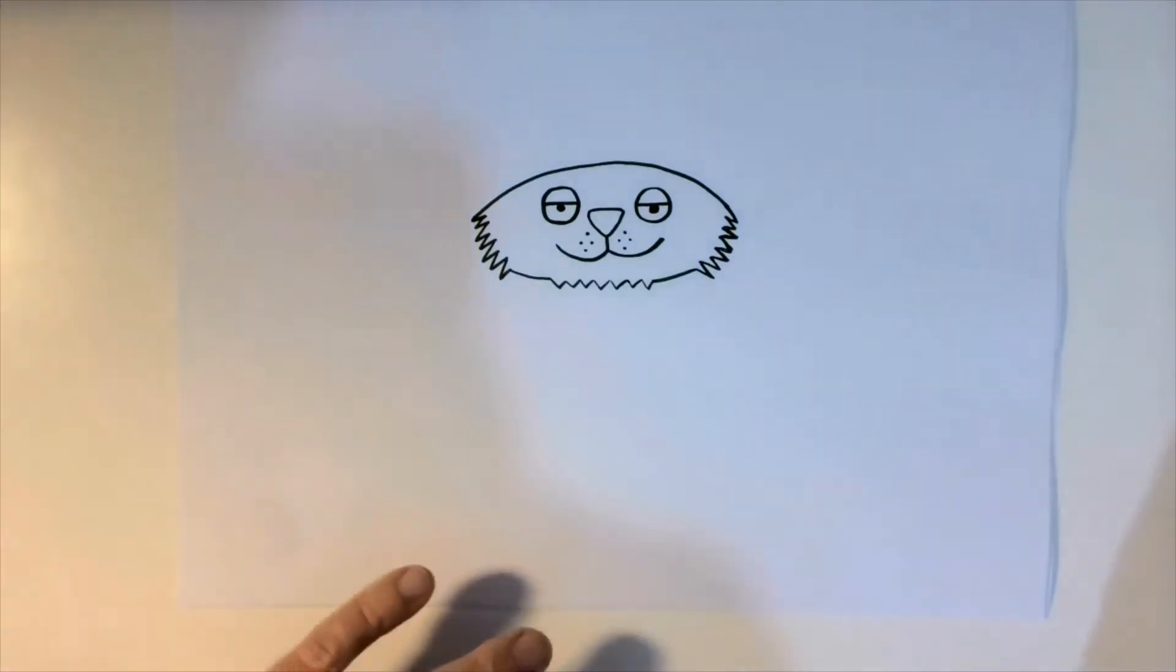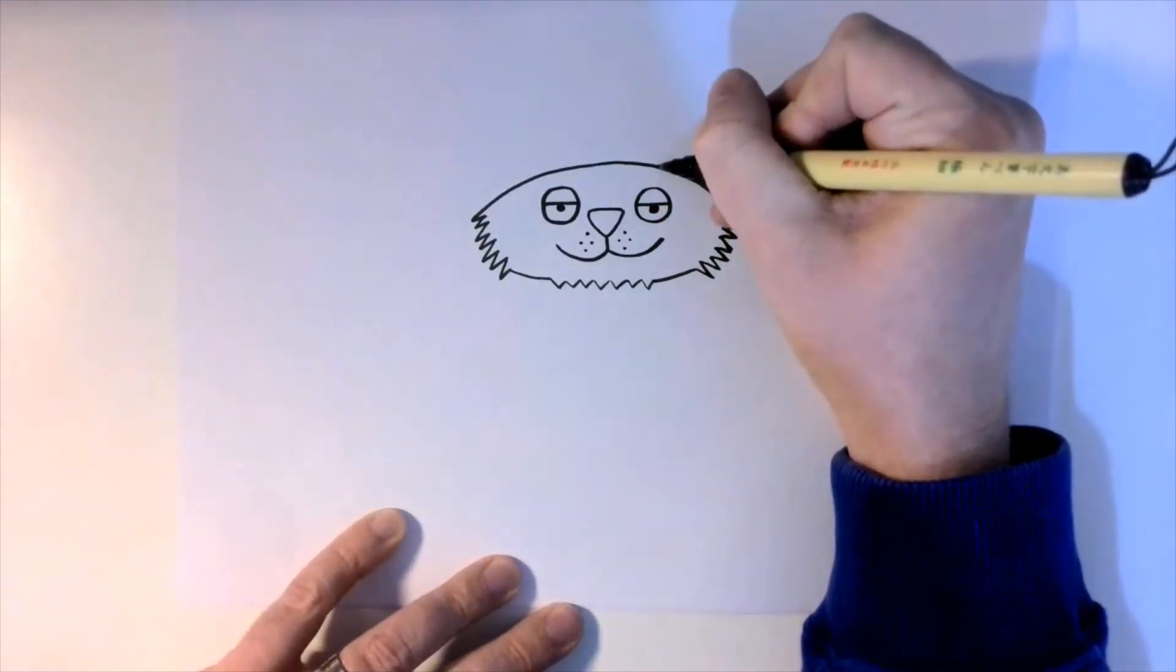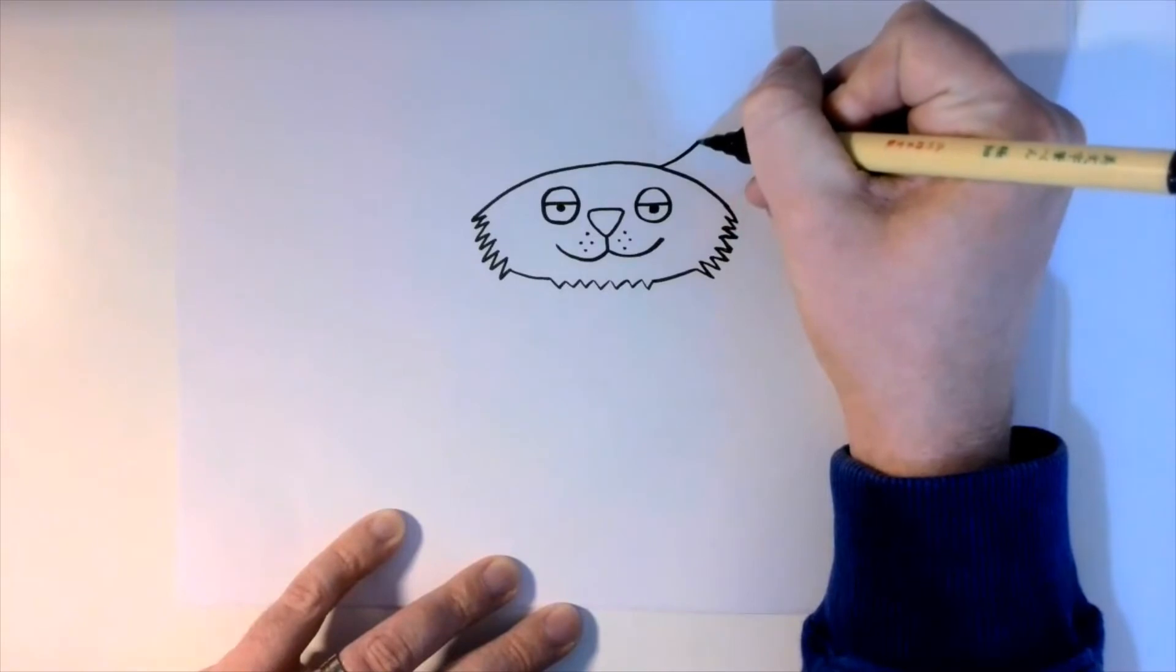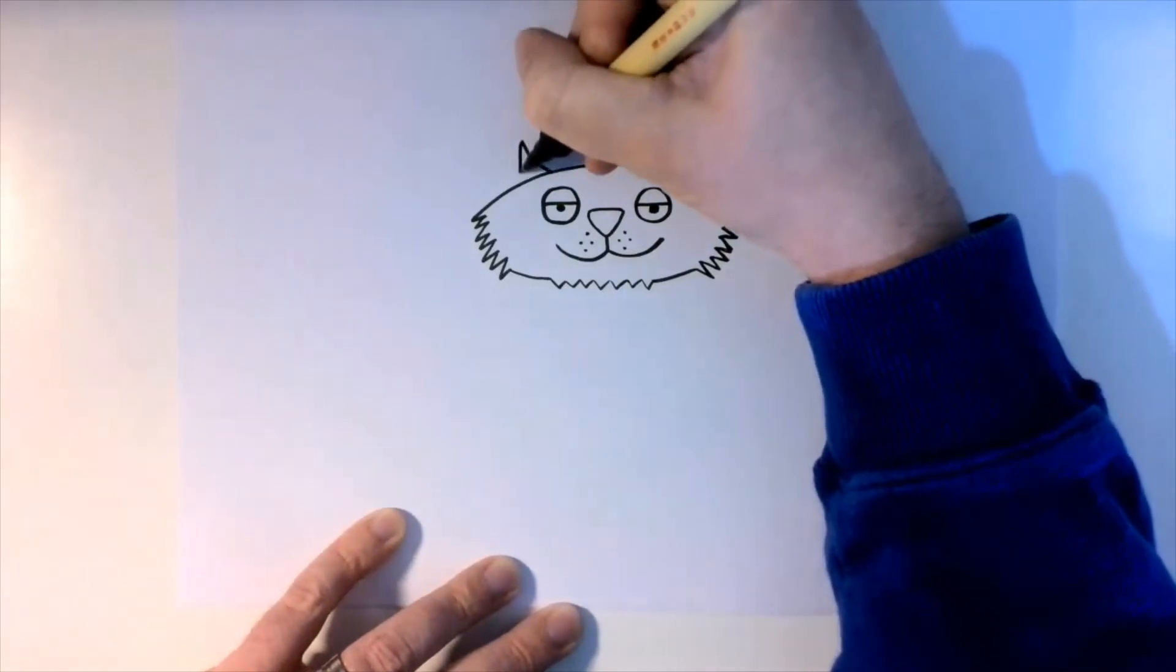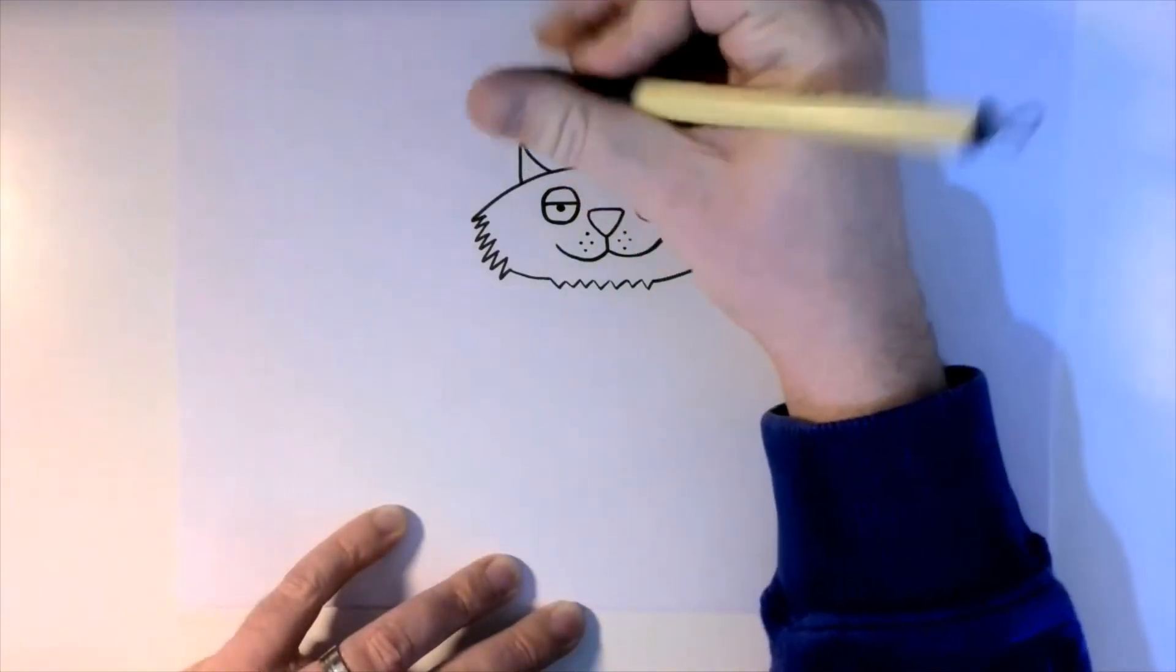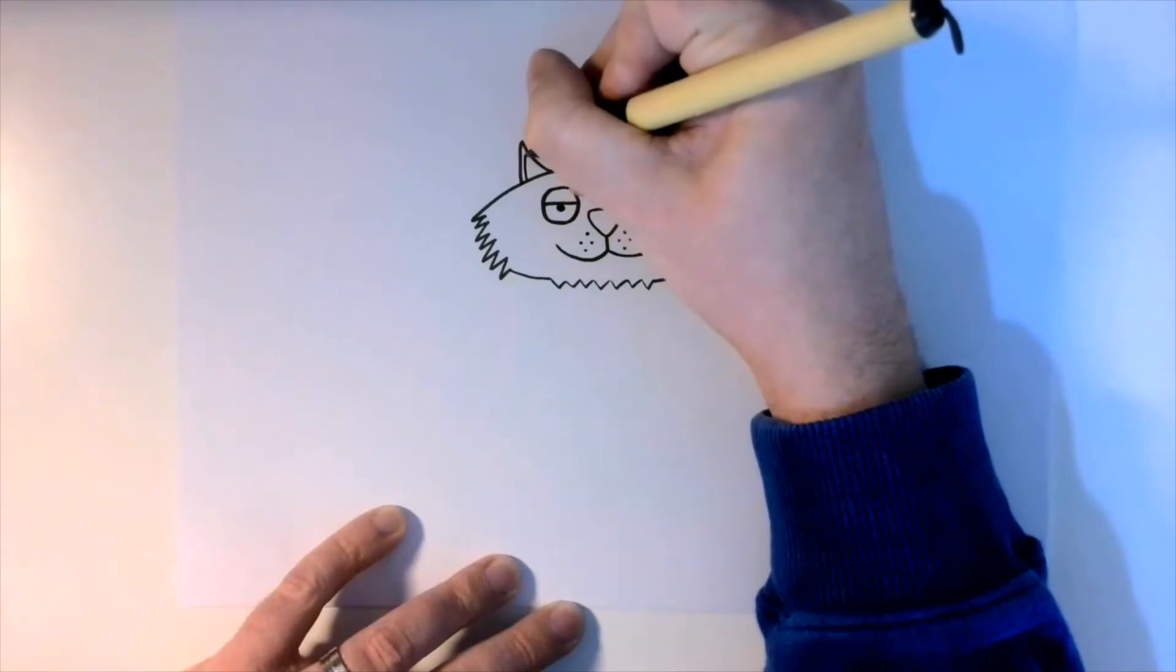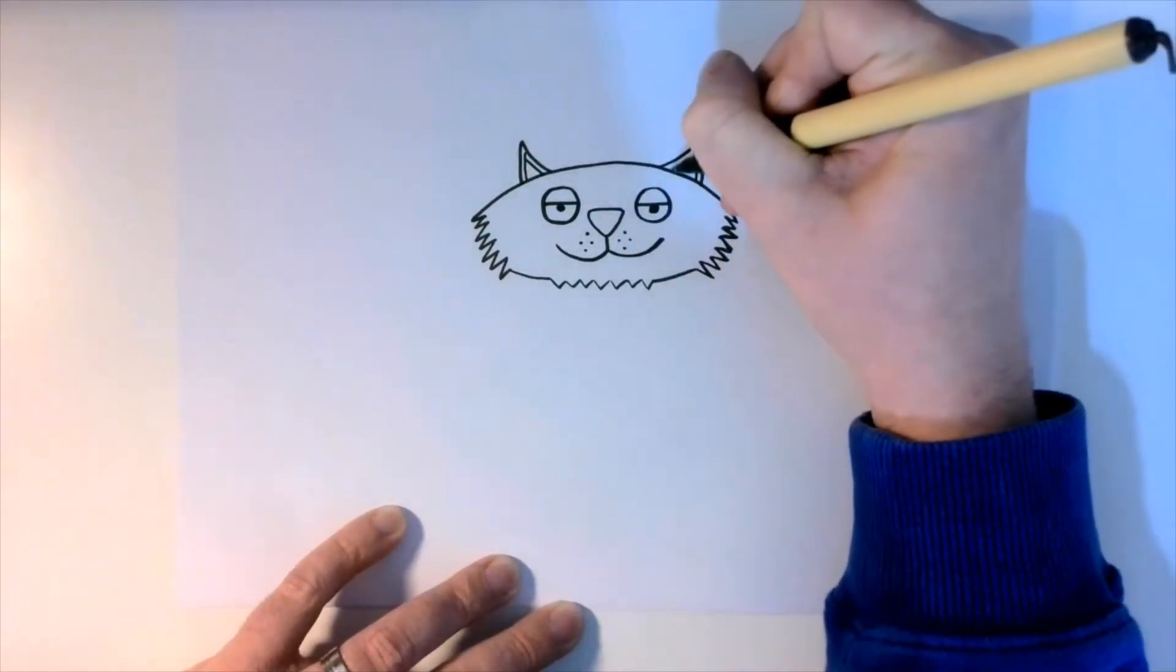Now a cat also has ears. Put some ears like that. They're not horns, they are ears, and we can show that by drawing the inside part.